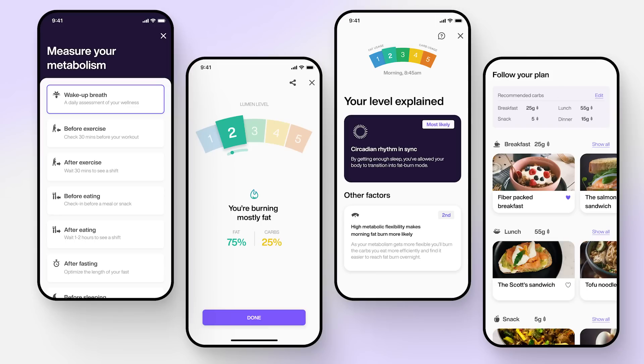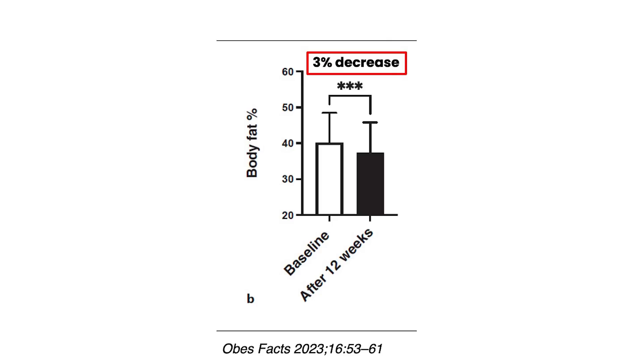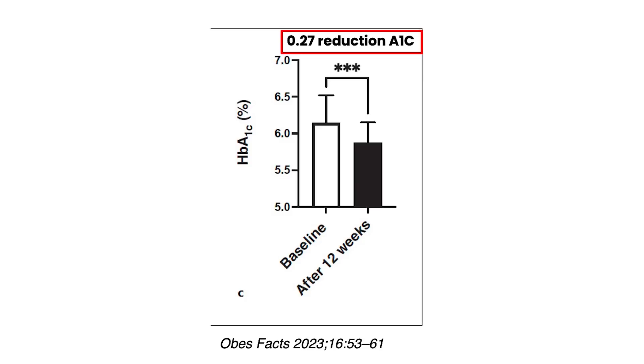Using their app and their device, they were able to provide individualized advice based on the RER. And what they did was they measured it every day. And then they gave them guidelines. And this is an example from the paper that they published. And over 12 weeks, simply following this device and the advice that was given through the app, they averaged a 13 pound weight loss, a 3% decrease in body fat, and a 0.3% reduction in the A1C.